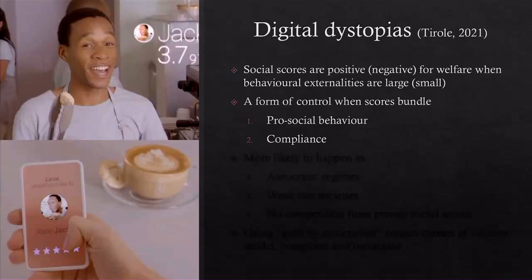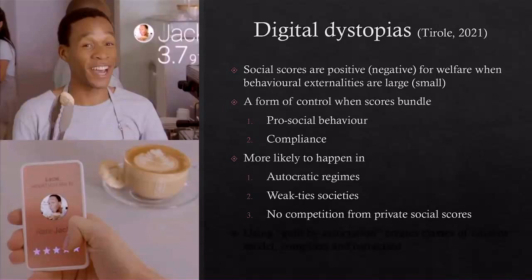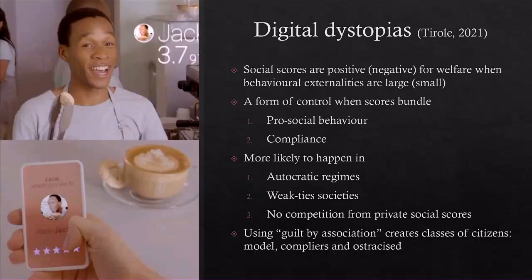What if you get a social score not only for driving safely, but also for not dissenting from the government, for not criticizing the government? When you see someone's social score of 100, you don't know whether it's because that person is a genuinely nice person, or just because they complied with the government. Tirole shows that totalitarian bundling is more likely in autocratic regimes and in weak-tied societies, where people get most of their information about you through the social score rather than from personal knowledge. It's also more likely when there is no competition from private scores — because private scores can unbundle the social score. And there are problems of guilt by association: if you are nice to someone with a low score, you get a low score too. That is a very powerful tool.